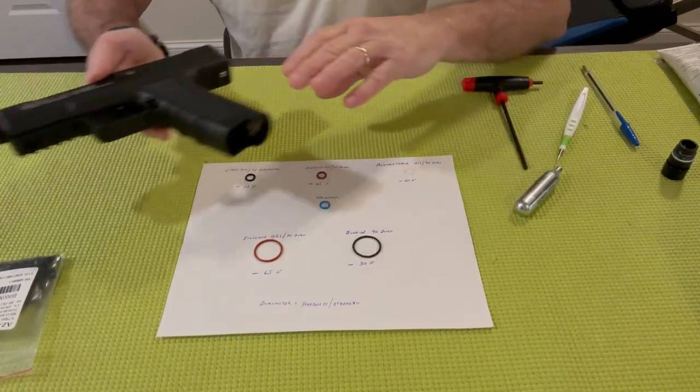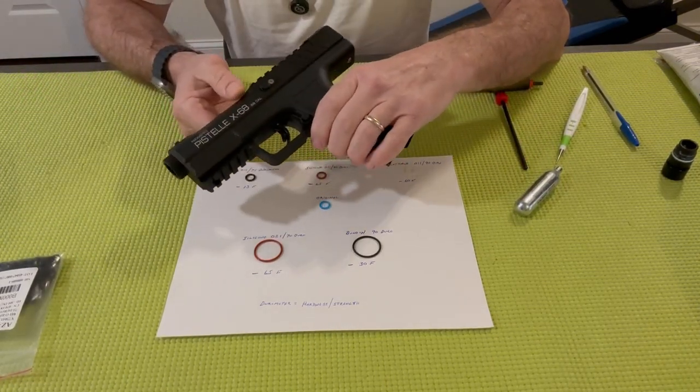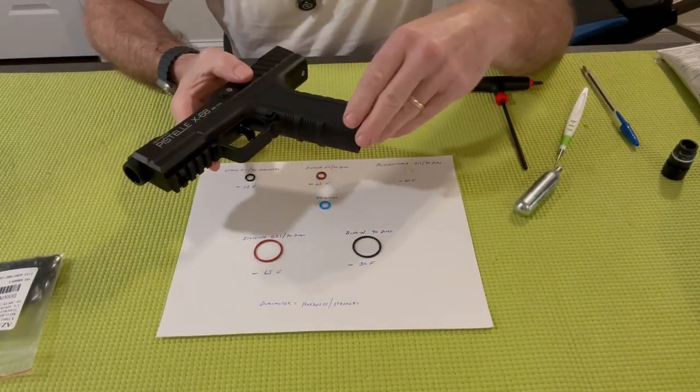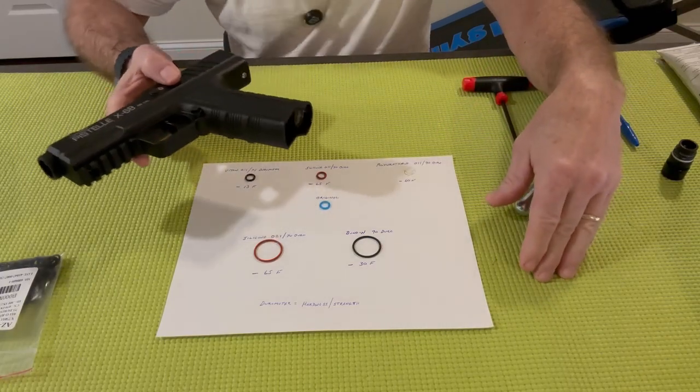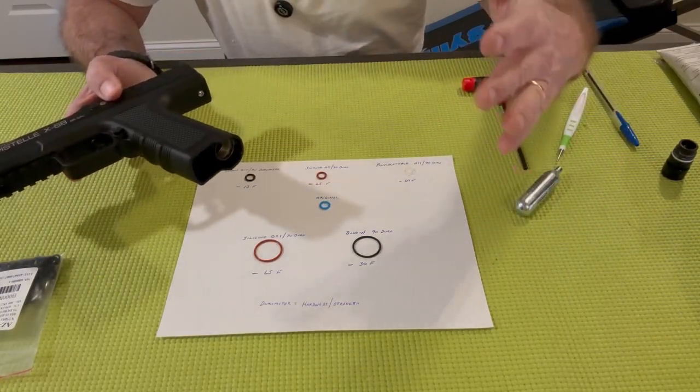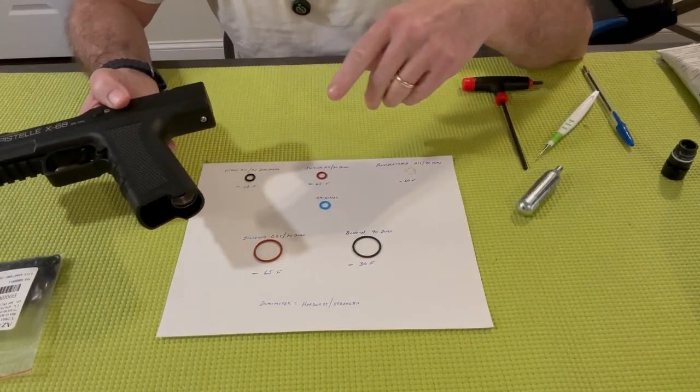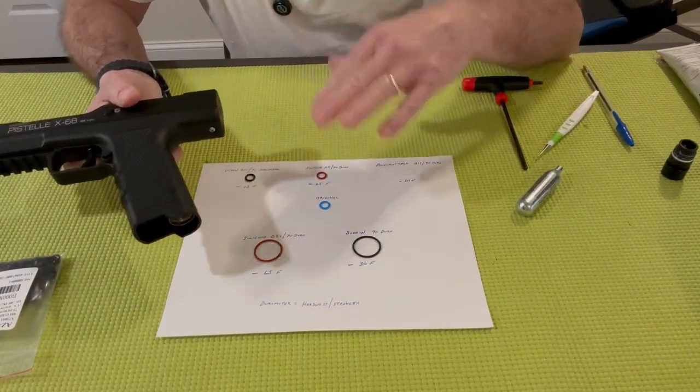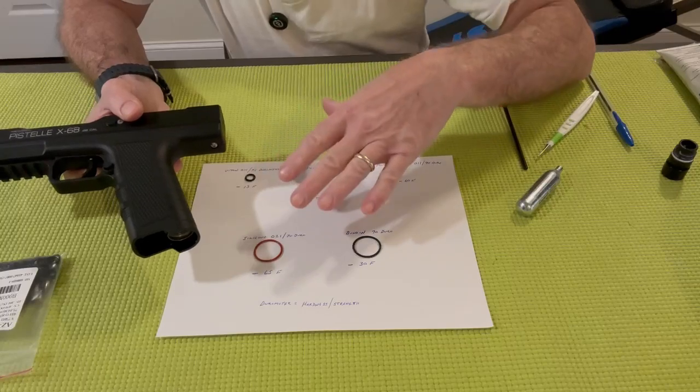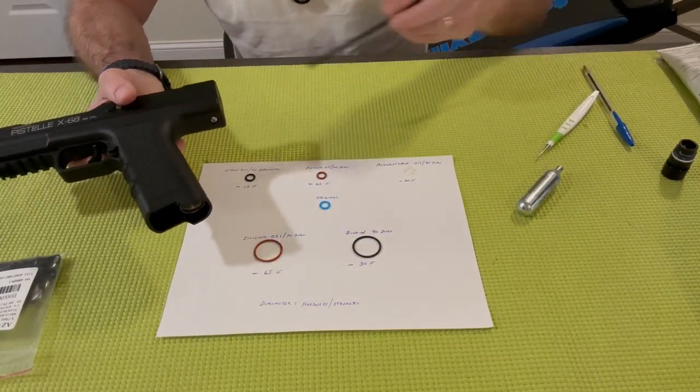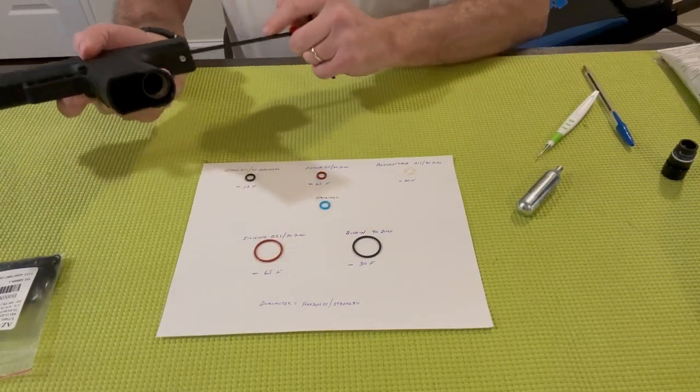We're looking at different type of options for your Pistel X68 or your Intro Buster, whichever version that you have. I have come across several different types. We're going to take this apart right now and show you what I'm talking about regarding the type of O-ring that you need. So let's go ahead and do that really quickly.